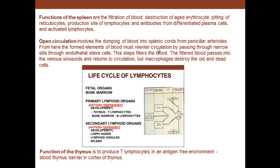Special endothelial cells remove aged red blood cells. As red blood cells age, they become less pliable, linger too long, and macrophages eat them up. In contrast, the thymus is a primary organ with antigen-independent development. Its function is to produce T lymphocytes in an antigen-free environment, which requires a blood-thymus barrier in the cortex.